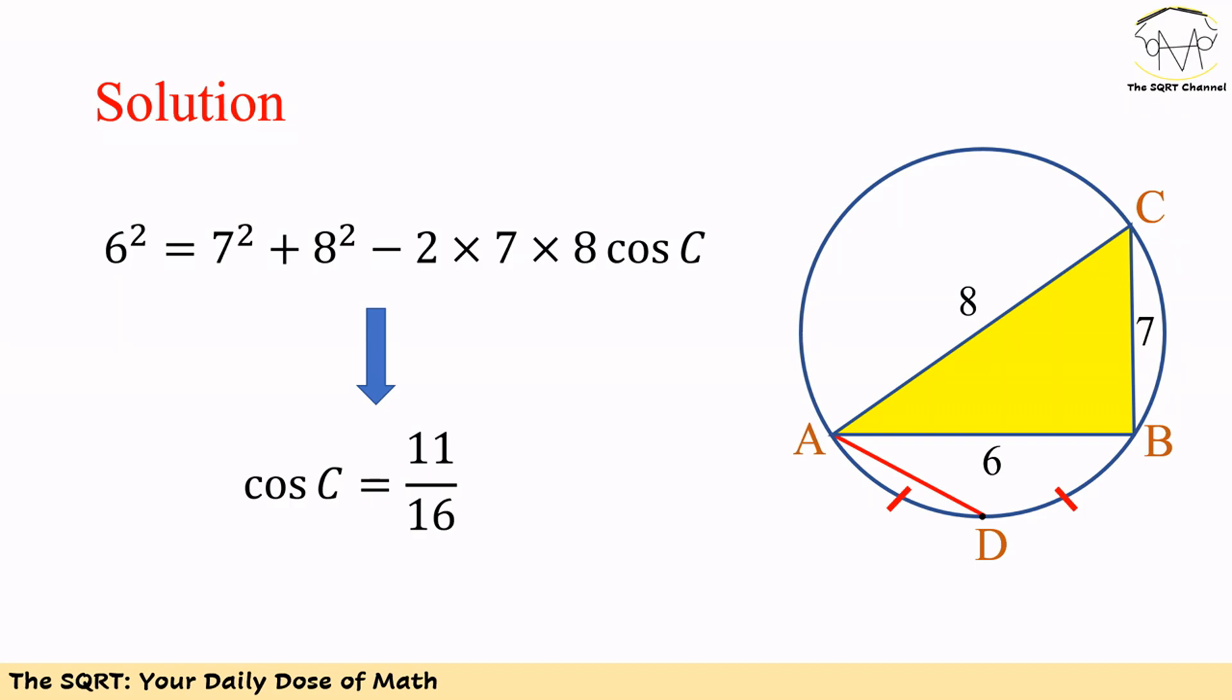For the yellow triangle, we write: 6² = 7² + 8² - 2(7)(8)cos C. Solving this, we find cos C = 11/16.